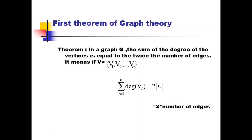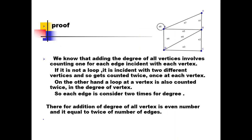Now let's prove that. Adding the degrees of all vertices involves counting one for each edge incident with each vertex. That is the definition of how we calculate the degree of a vertex. Consider any vertex d — to calculate its degree, we count the number of edges incident with d. So any edge is counted one time at each vertex.